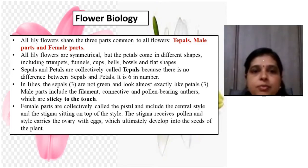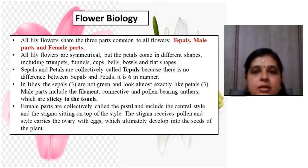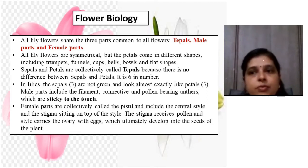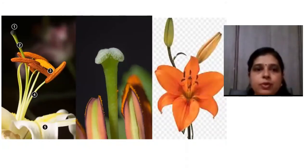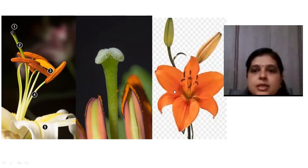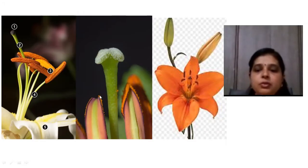Some varieties like Aphrodite, Phoenix, and Tiara have non-sticky male parts. Before entering a lilium field, one should be careful that the sticky pollen does not stain clothing. This figure shows the sepals, petals, male part, and female part of the lilium flower.